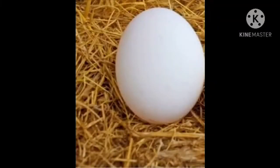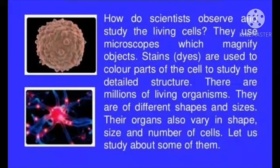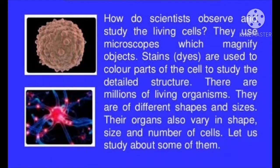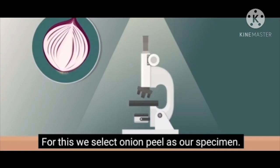The egg of a hen represents a single cell and is big enough to be seen by the unaided eye. Organisms show variety in cell number, shape and size. Scientists observe and study living cells using microscopes which magnify objects. Stains or dyes are used to colour parts of the cell to study the detailed structure.